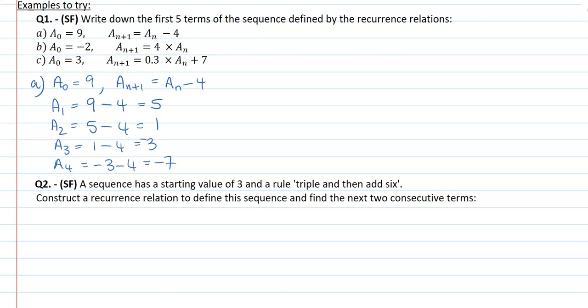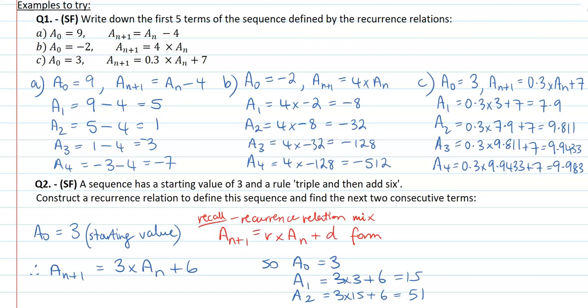Have a go at 1B and 1C and give Question 2 a go as well. For 1B, using a geometric sequence, you should have ended up with negative 8, negative 32, negative 128, and negative 512. For C, we had a combination of arithmetic and geometric starting with an initial value of 3. The next terms are 7.9, 9.811, 9.9433, and 9.983 — rounding those values at the end.